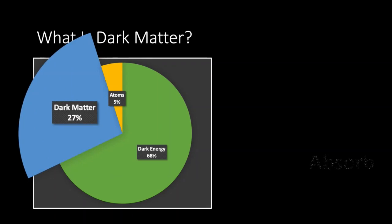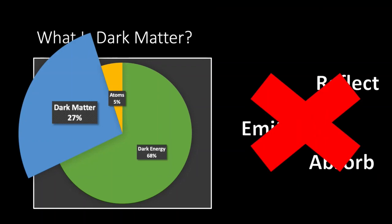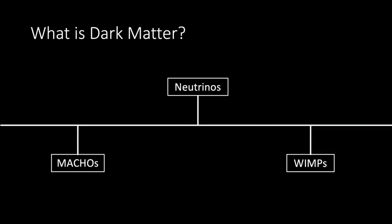Dark matter doesn't absorb, emit or reflect light, so it can't be detected by observing electromagnetic radiation. We have been speculating about what dark matter is and have put forward many ideas for what it could be.